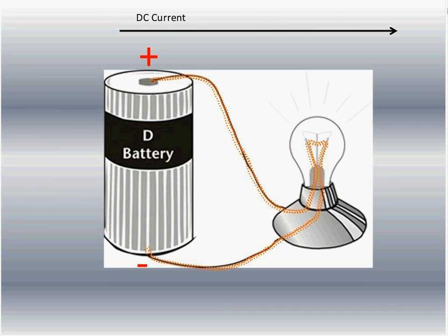Heat is one thing we get. What's the other one? Illumination — light. We get heat and light out of it. This is something you're going to have to remember for the next few sessions because we're going to come back to what electricity is really doing.